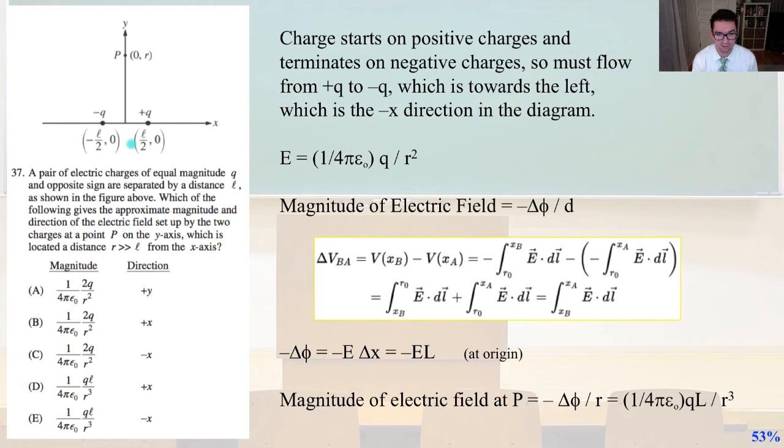So the flow must be from positive Q to negative Q, which is towards the left, which is the negative X direction in the diagram. So E equals one-fourth pi times epsilon over Q, the charge divided by R squared. So the magnitude of the electric field equals negative change of phi divided by D. So where the negative change in phi equals negative E times the change in X equals negative E times L at the origin. So the magnitude of the electric field at P equals negative phi, negative change in phi divided by R equals one-quarter pi times epsilon times QL divided by R cubed. And so that is indeed answer E.